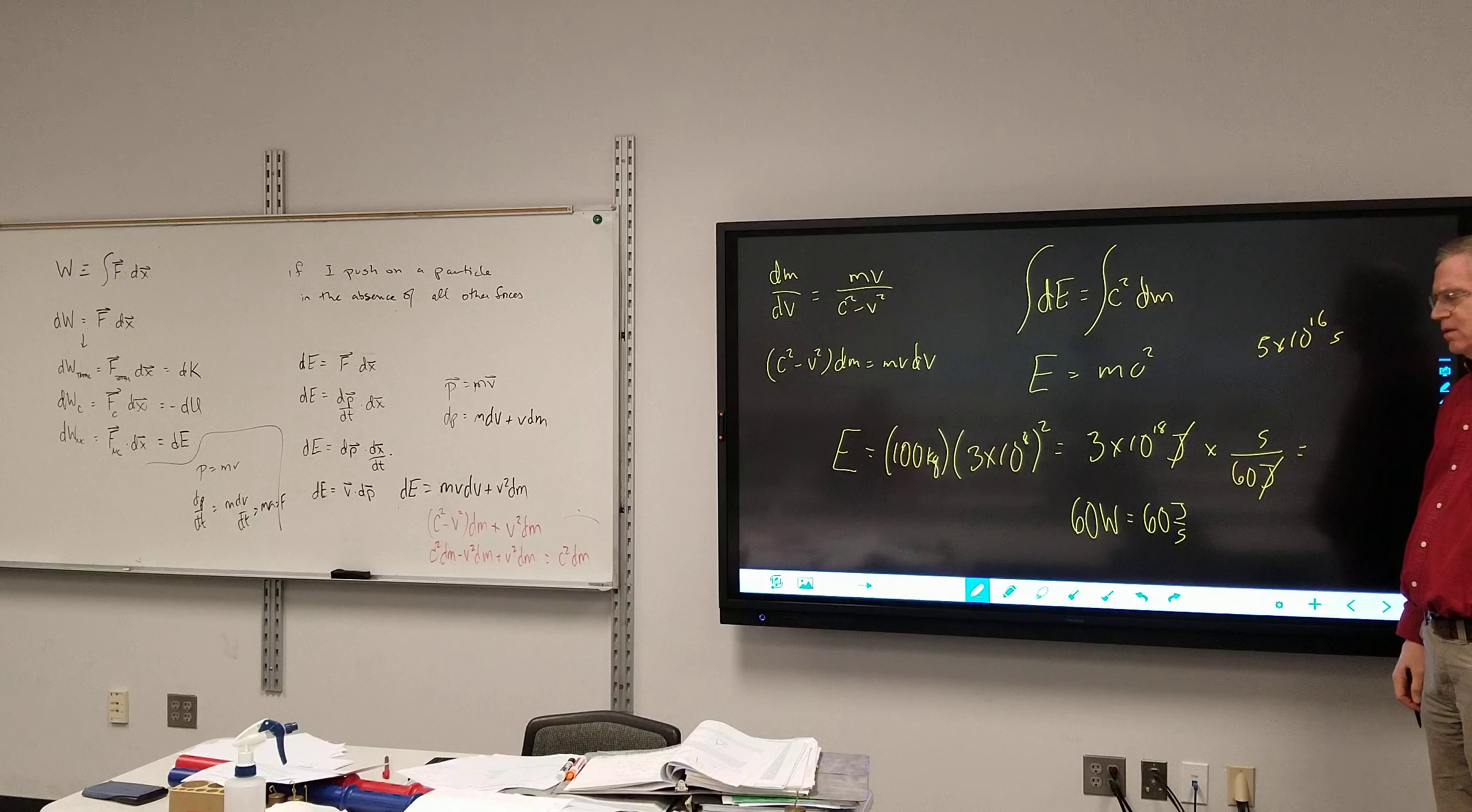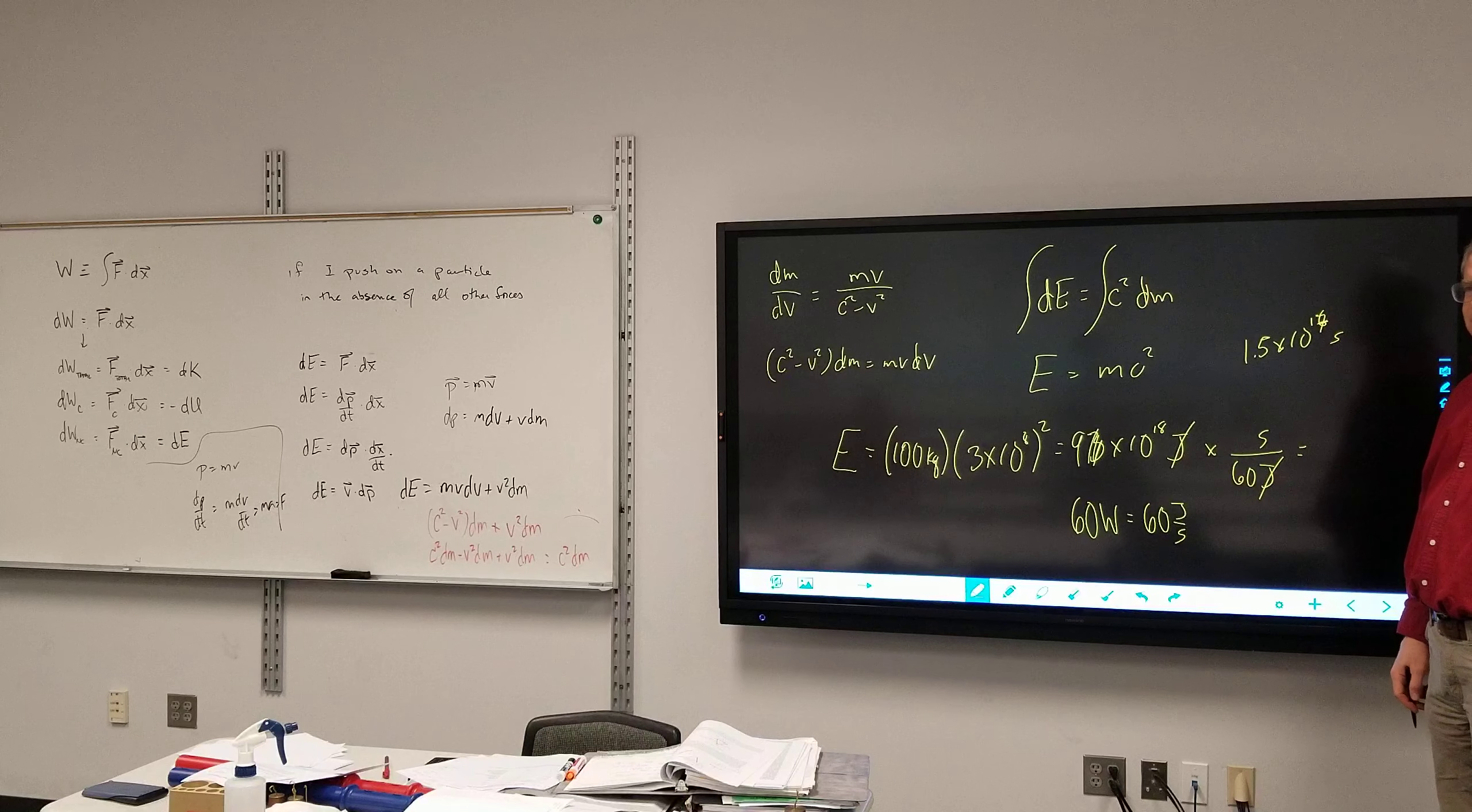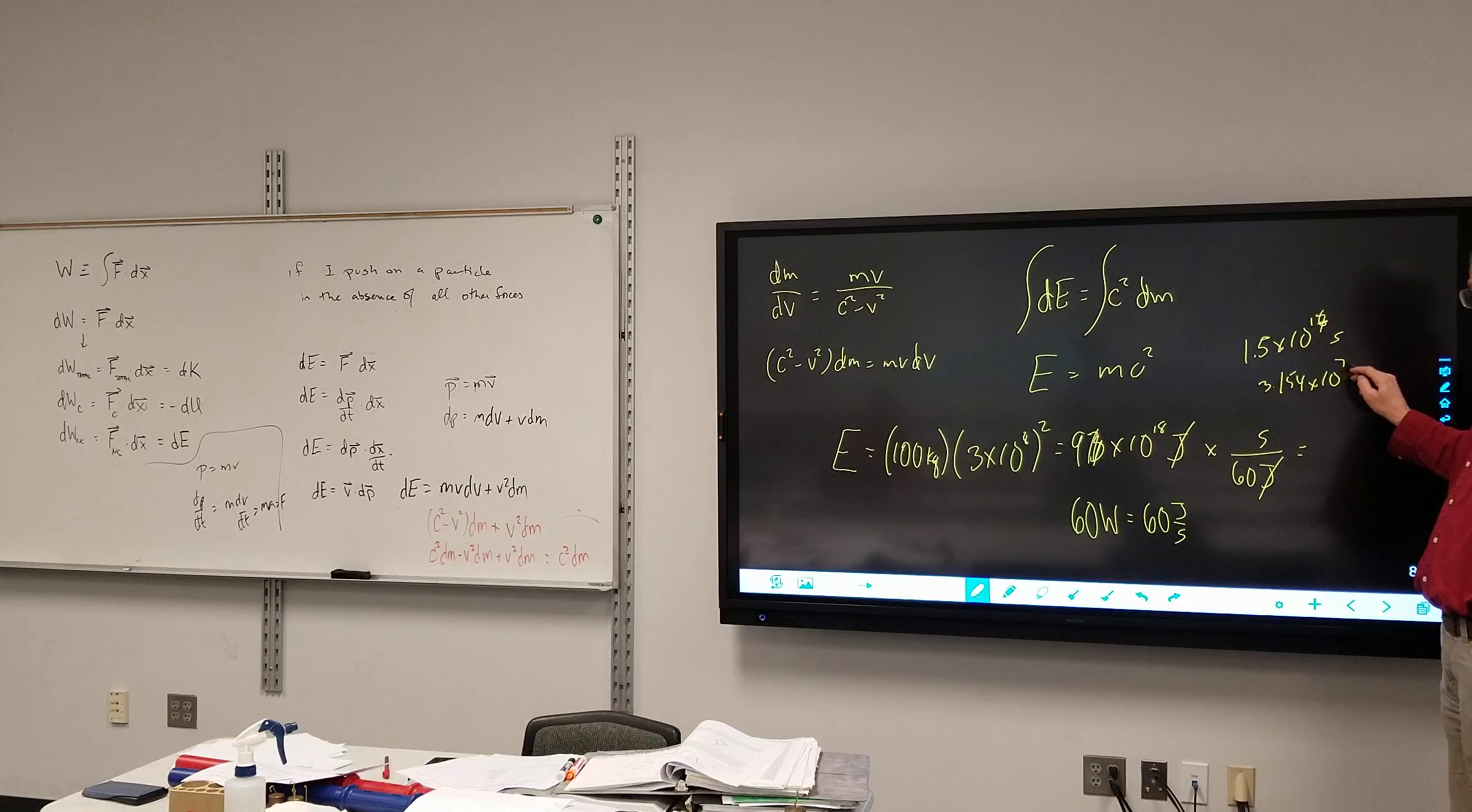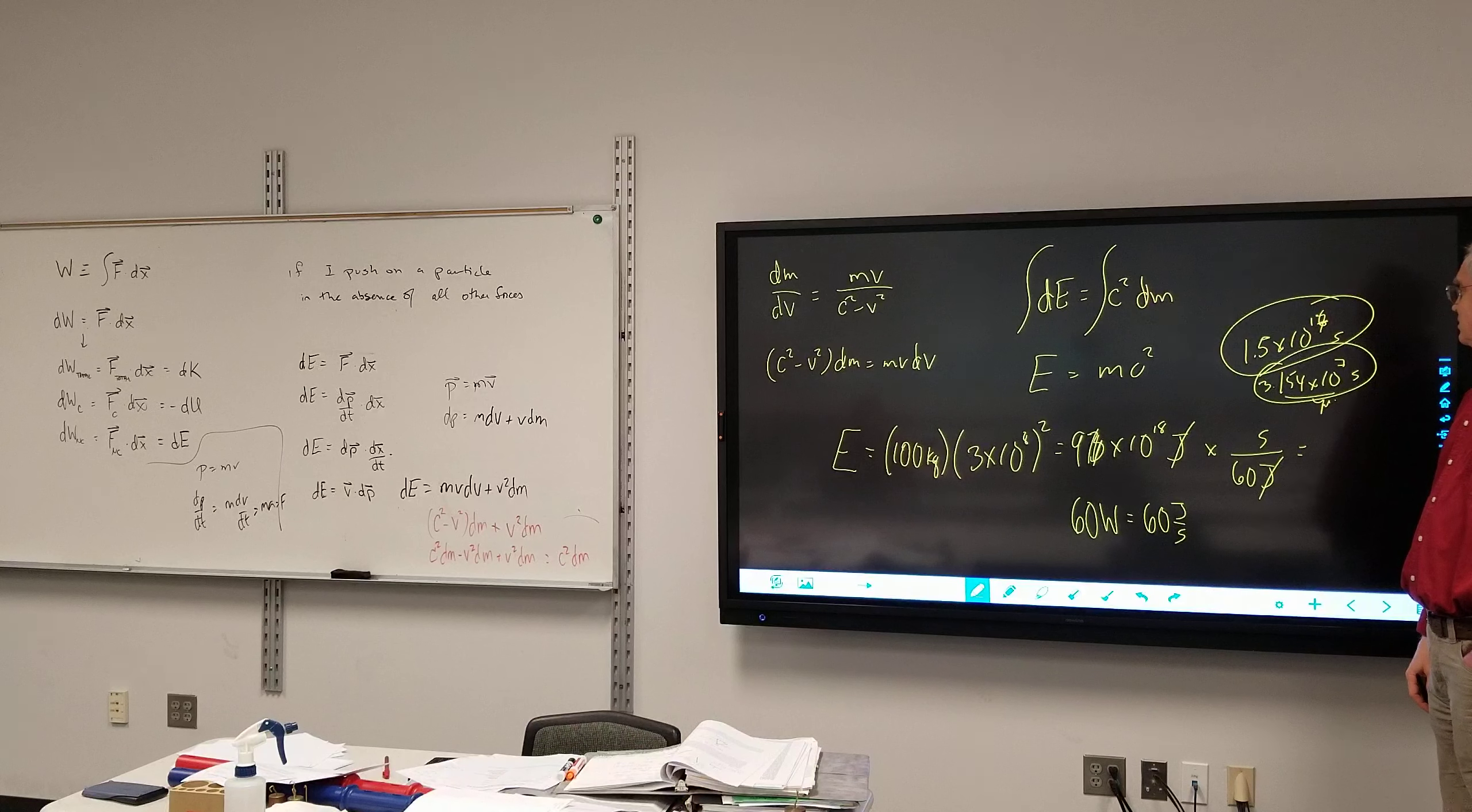Wouldn't it be 9 times 10 to the 18th? It would be, it would be, thank you. Which changes this number to 1.5 times 10 to the 17th. Yeah. All right. Number of seconds in a year? You looking it up, Sarah, I assume? 3.154 times 10 to the 17th. 10 to the 17th? Yeah. That's seconds per year. So, if I divide that by that, that's all.